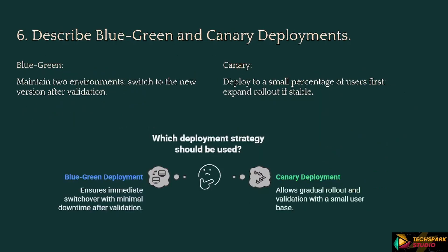Next: Describe blue-green and canary deployments. Possible response: Blue-green — maintain two environments and switch to the new version after validation. Canary — deploy to a small percentage of users first, then expand rollout if stable.